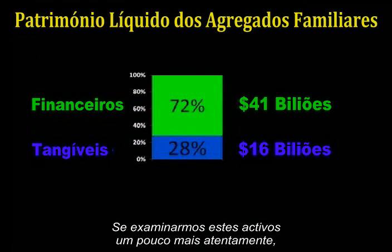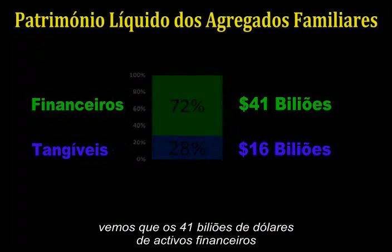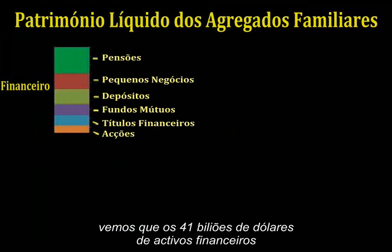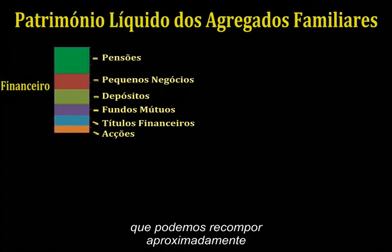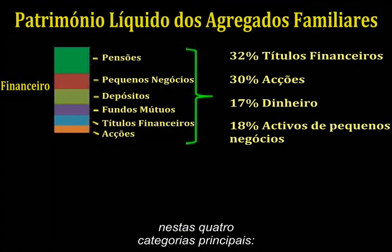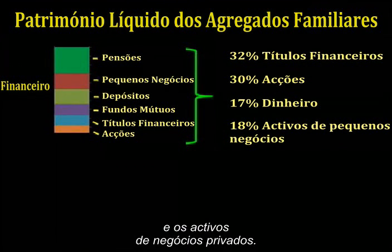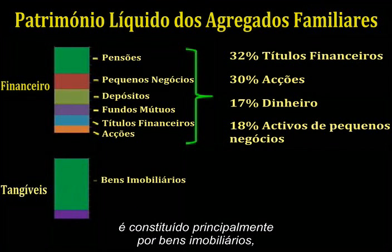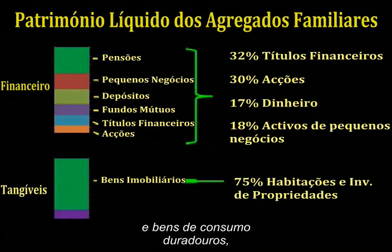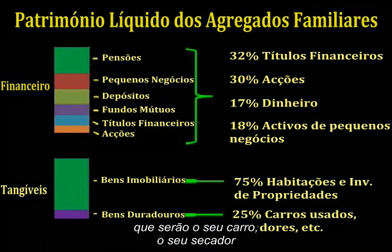The $41 trillion worth of financial assets consists of things like pension funds, the assets of privately held businesses, deposits, stocks, and bonds — which we can roughly recompose into four main classes: stocks, bonds, cash or deposits, and the assets of privately held businesses. The other bucket of $16 trillion in tangible assets consists primarily of real estate, which is 75% of this bucket, and consumer durables — your car, your dryer, and your snowblower if you happen to have one.